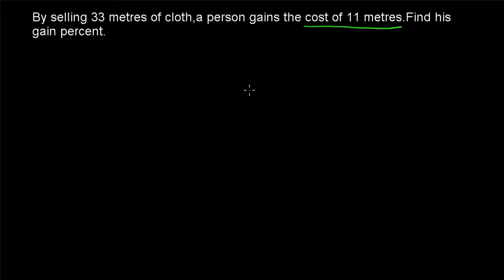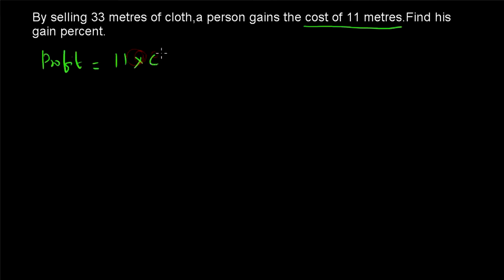In the first question we could simply write gain as 11 SP and total selling price as 33 SP, find cost price, and get the gain percentage. But here it is specifically given as the cost of 11 meters. So we don't know the cost price or the selling price directly. The only information we have is that profit equals 11 times cost price when selling 33 meters of cloth.